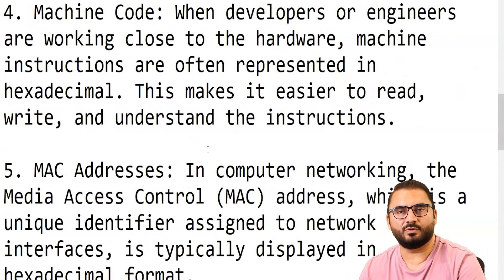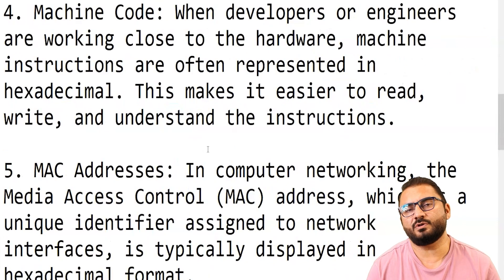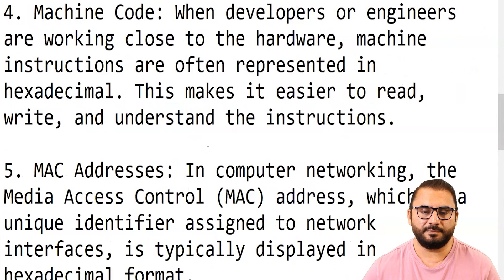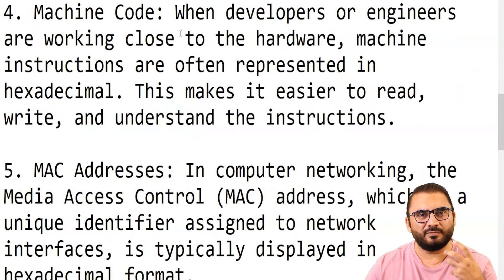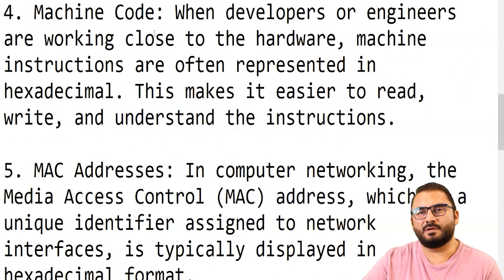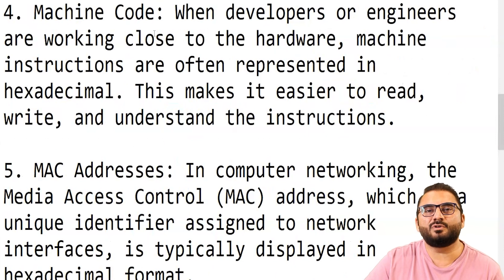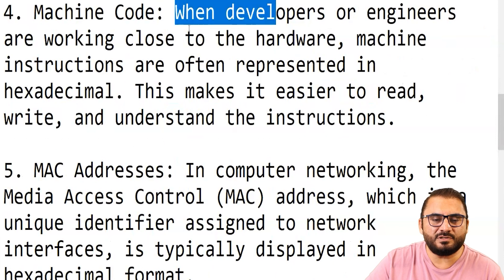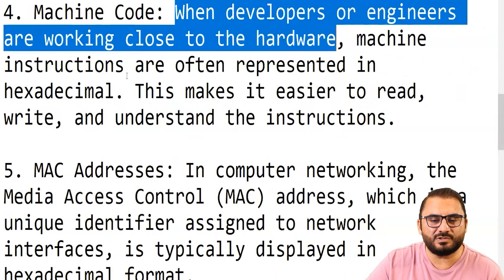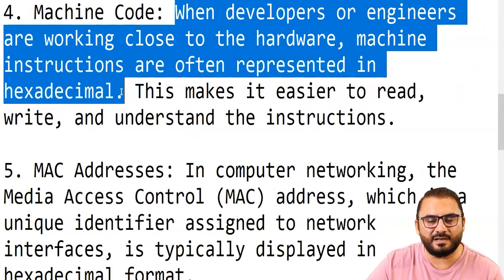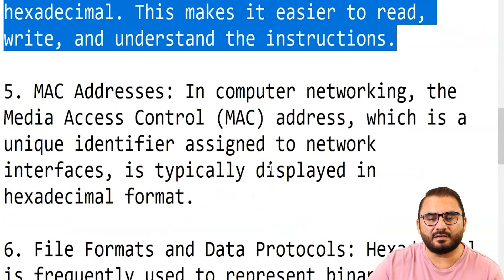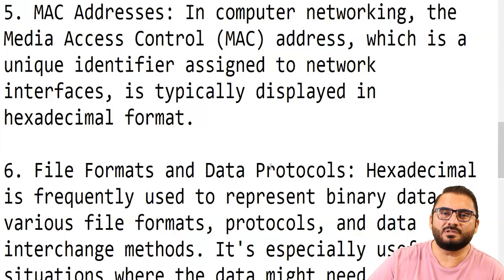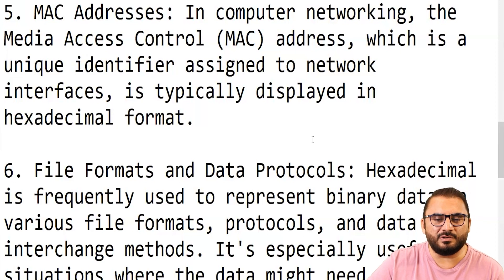Then comes machine code. Machine code is code in binary that can be understood by the processor directly without any intervention. When developers or engineers are working close to the hardware, machine instructions are often represented in hexadecimal. This makes it easier to read, write, and understand the instructions, and the computer then converts them directly into binary to use them.